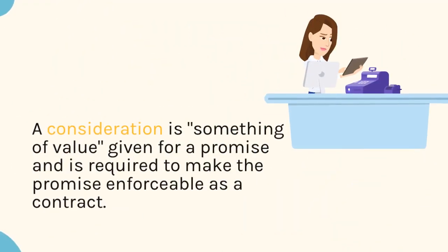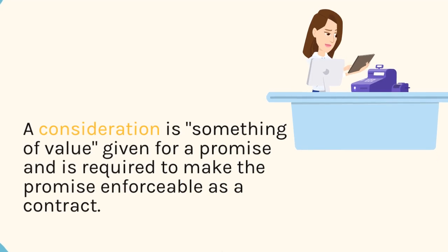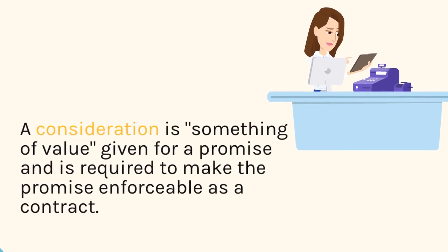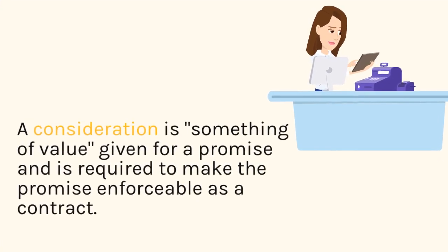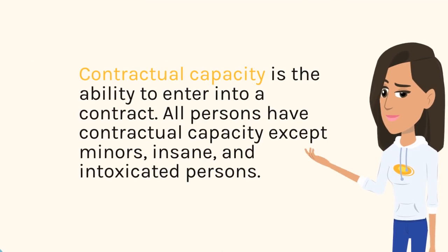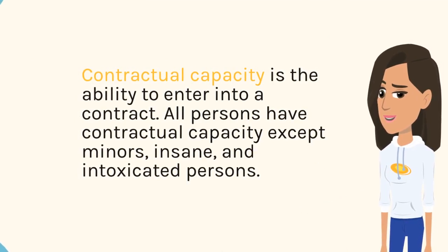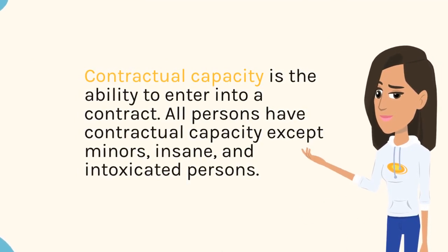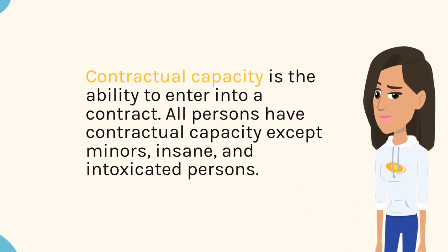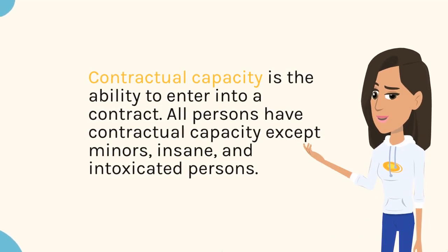A consideration is something of value given for a promise, and is required to make the promise enforceable as a contract. Contractual capacity is the ability to enter into a contract. All persons have contractual capacity except minors, insane, and intoxicated persons.